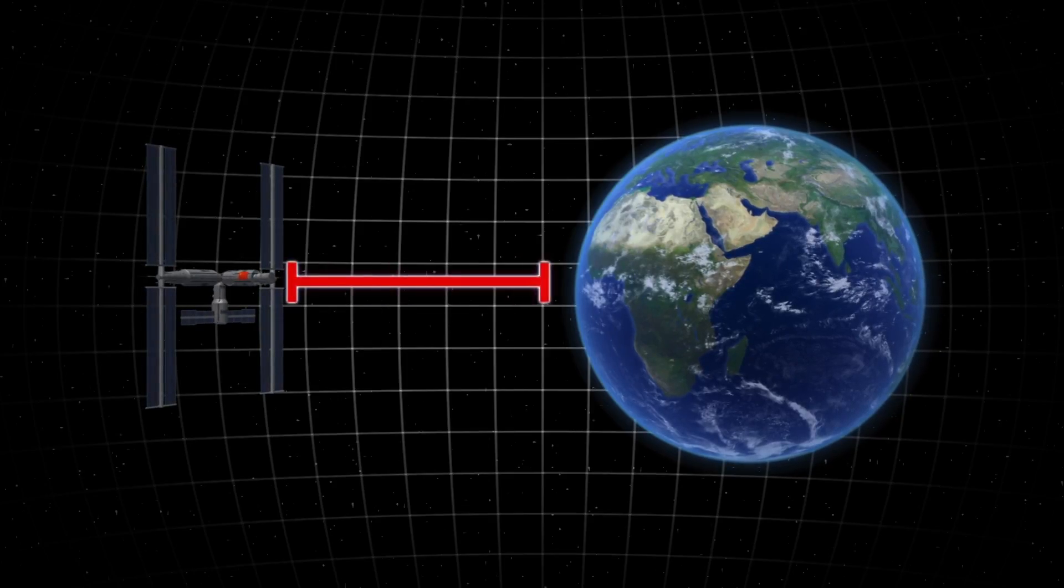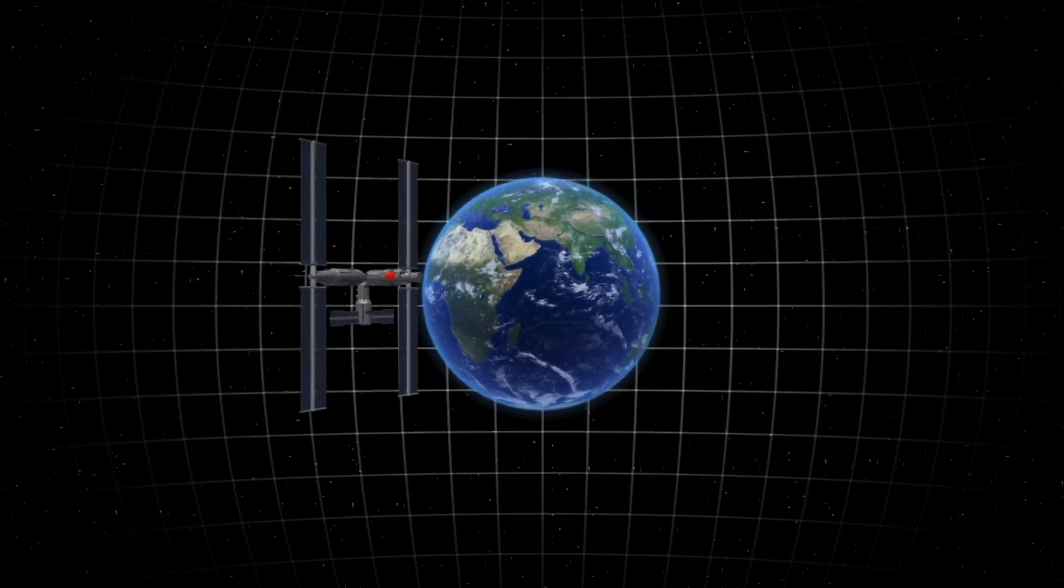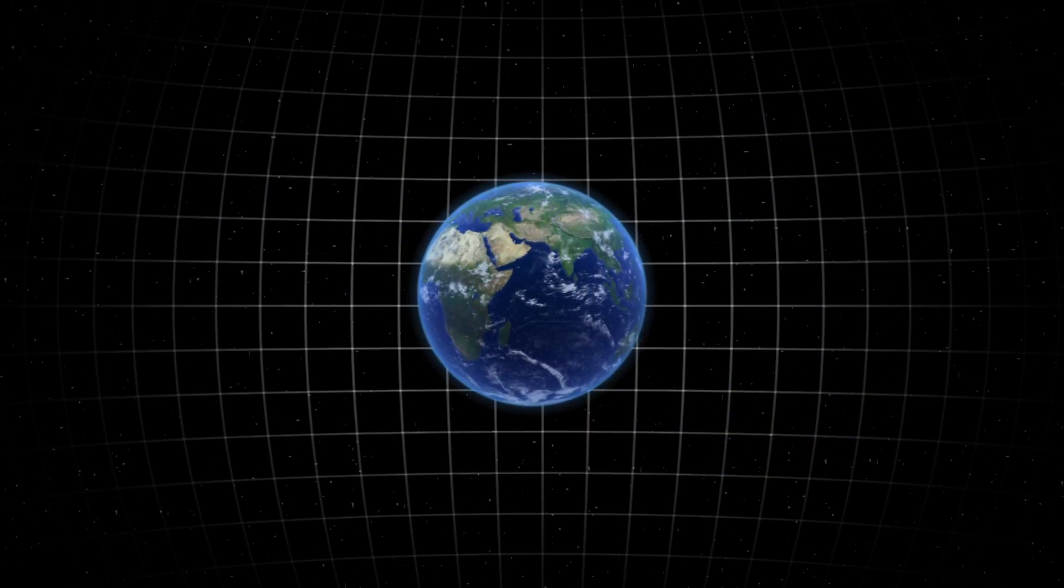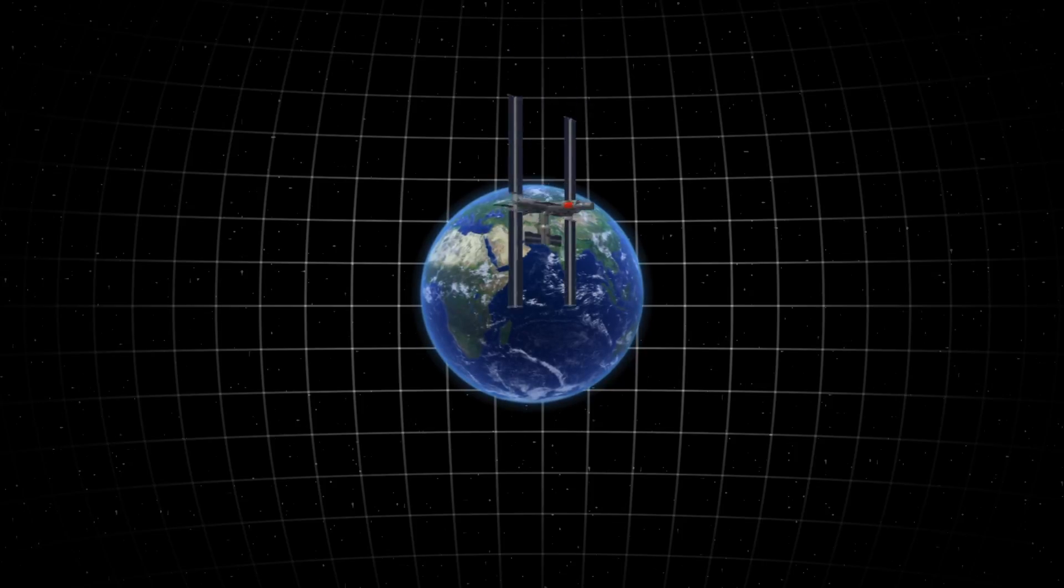China says their planned space station will orbit Earth at altitudes between 340 kilometers and 450 kilometers. The ISS orbits at around 400 kilometers.